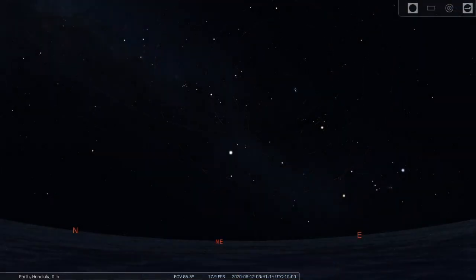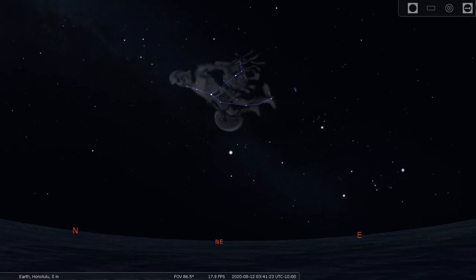Meteor showers are named for the constellation where the meteors appear to come from. The Perseid shower is named for the constellation Perseus, for example. Generally, these constellations are rising in the east during the prime after midnight viewing time for a meteor shower.